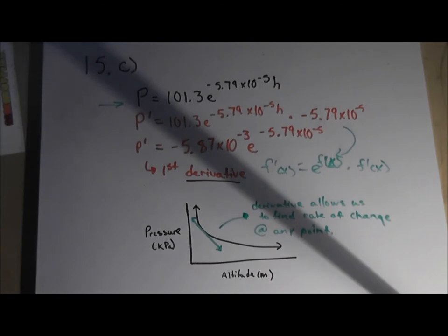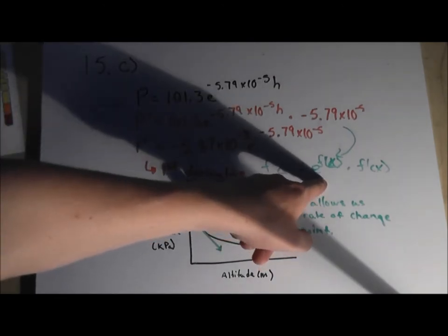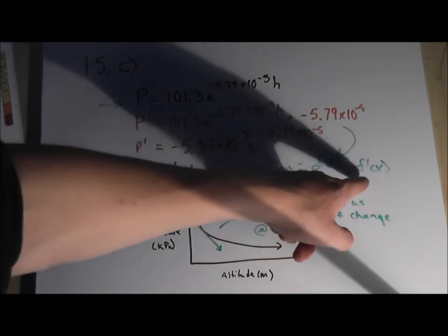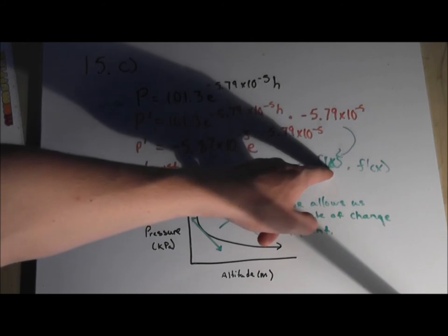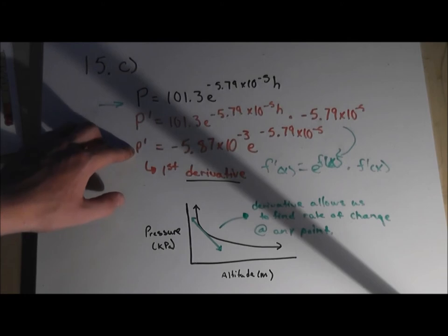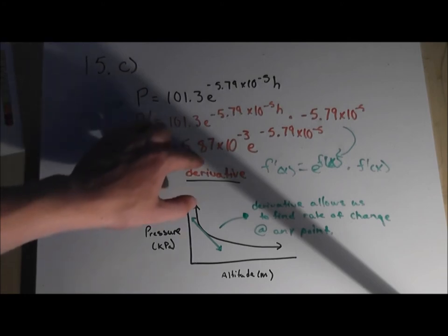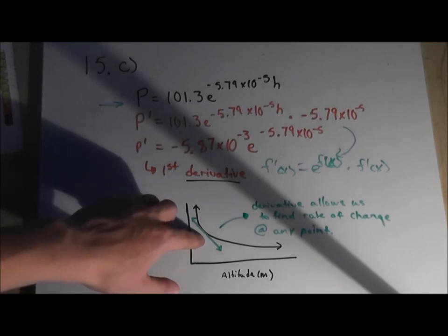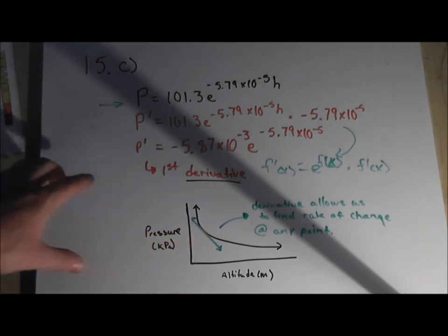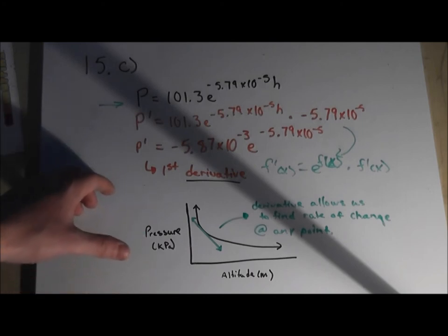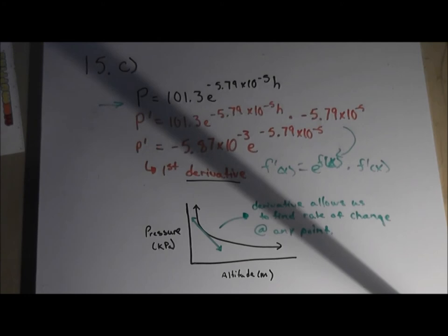So the derivative, you keep the original function, and you take the derivative of f at x in the power. And that's what we've done here, taken the first derivative. And here we have our first derivative formula. Now the derivative formula will allow us to find the rate of change at any point on a graph. And here's a little sketch approximation of this graph. And that's what the derivative allows us to find the rate of change at any point.